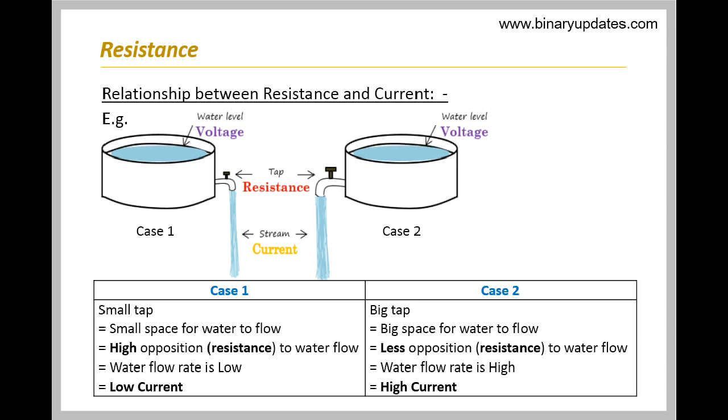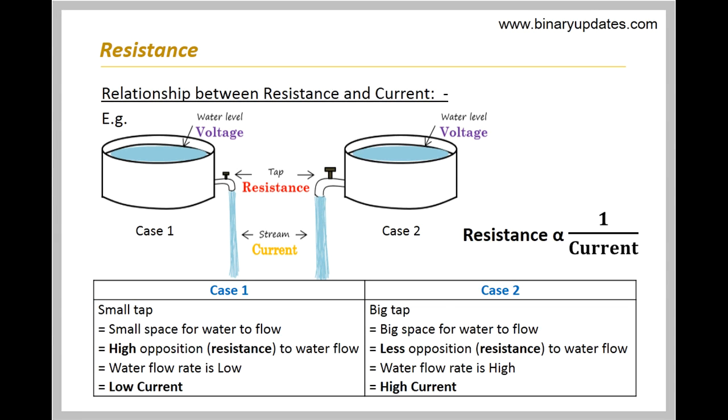We can say that for high resistance, current is low and vice versa. Hence resistance is inversely proportional to current.